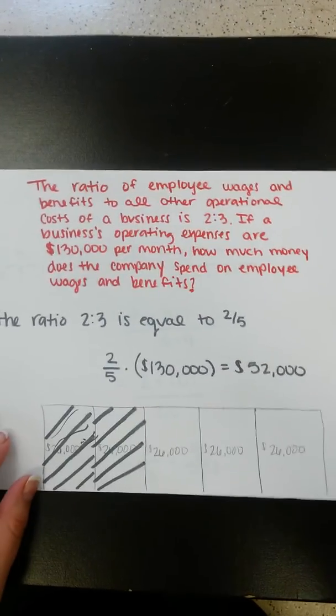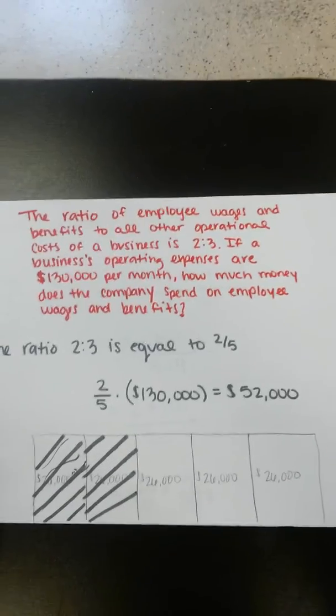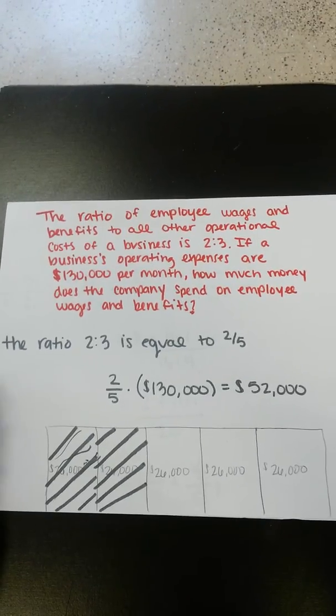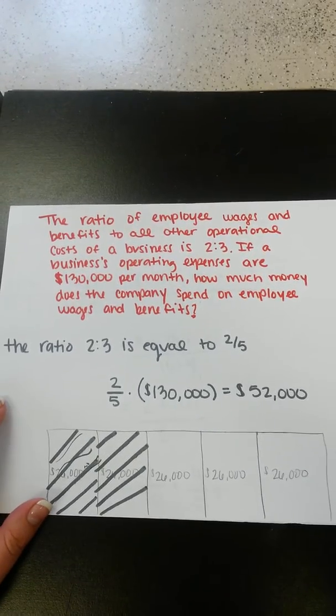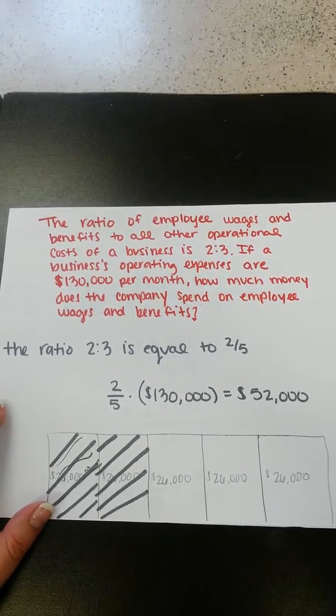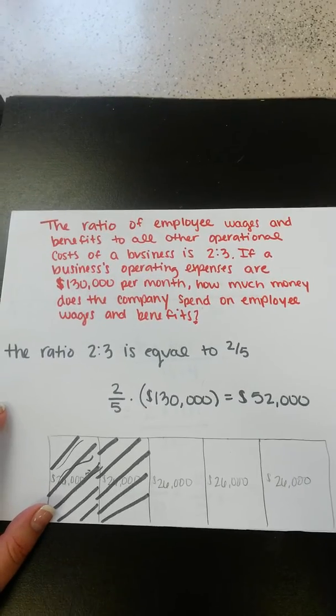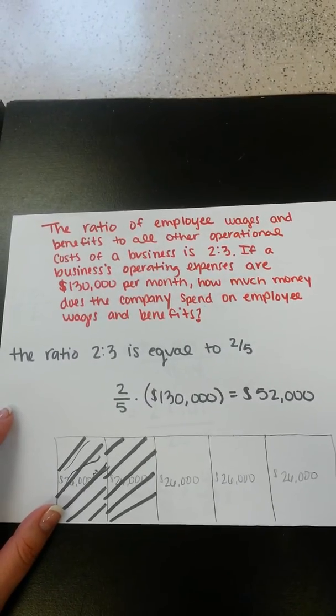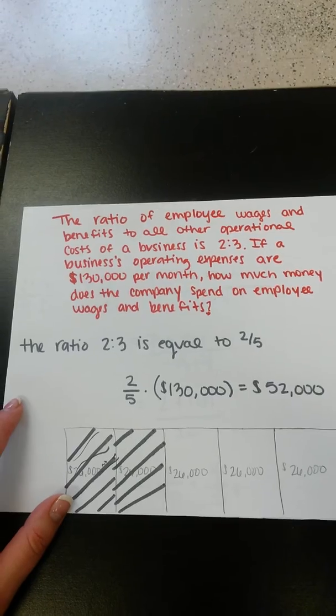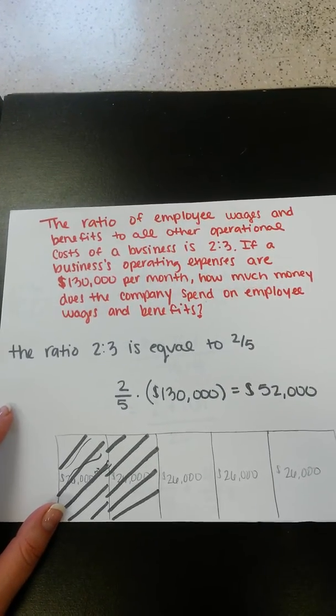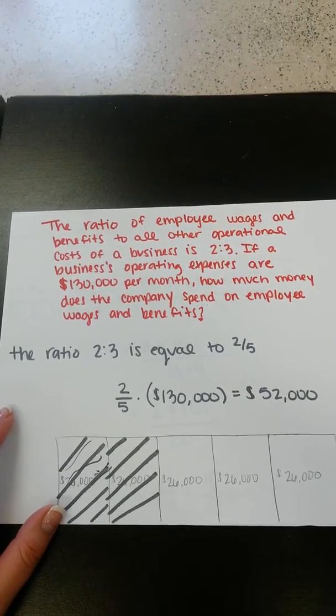All right, the next one we'll look at is this. It says the ratio of employee wages and benefits to all other operational costs of a business is 2 to 3. If a business's operating expenses are $130,000 per month, how much money does the company spend on employee wages and benefits?